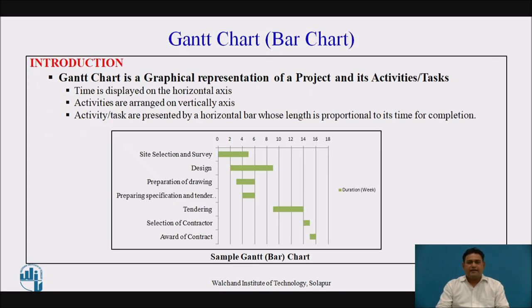A Gantt chart is a graphical presentation of the project and its activities. The horizontal axis represents the duration and the vertical axis represents the activities. The bars present between these two axes represent each activity, and the length of the bar represents the time required for the completion of that activity.